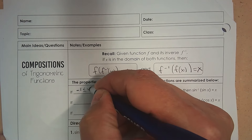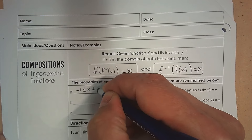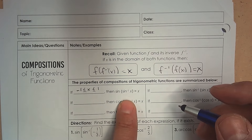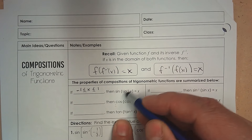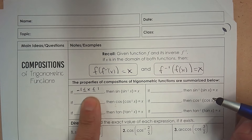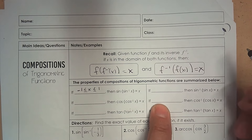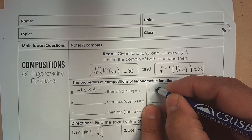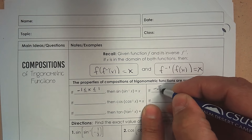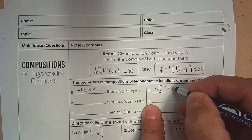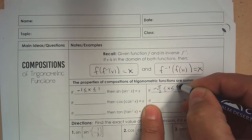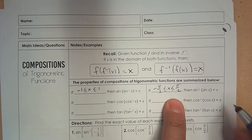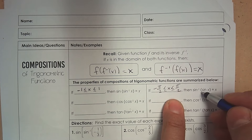For sine, if X is between negative 1 and 1, then the inverse of that equals X — they cross out — but only if that domain restriction is met. In the other direction, it has to do with the angle, and the angle must be between negative pi over 2 and pi over 2. Then they cross out, and whatever that angle is inside is the answer.